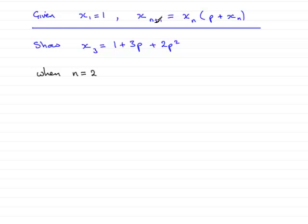So if we put n is 2 into here, we have x₃ is equal to x₂ multiplied by p plus xₙ, n is 2, so that's x₂.